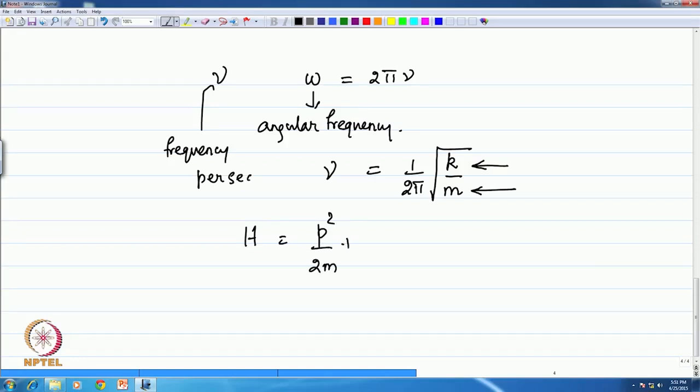And p of course is mass times the velocity. Therefore, the parameters for the harmonic oscillator are only m and k. If you want to write it using the angular frequency, you can write this as p² by 2m plus half m ω² x². This is the classical Hamiltonian.